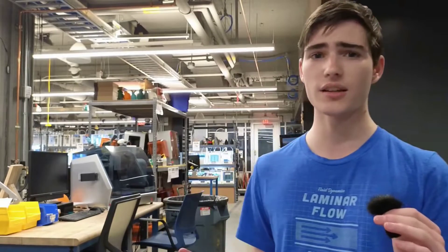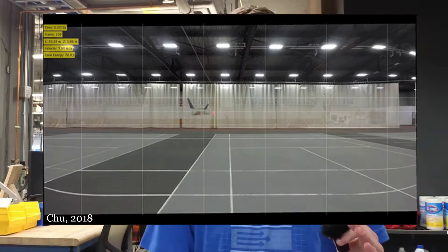Imagine a solar plane using ion propulsion to fly nigh indefinitely. Don't believe ion flight is possible? Here's the MIT ion thrust plane from 2018.